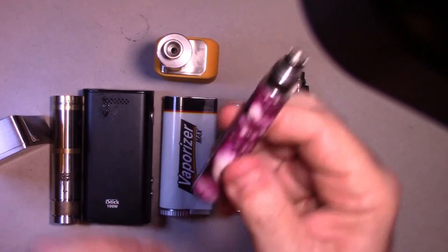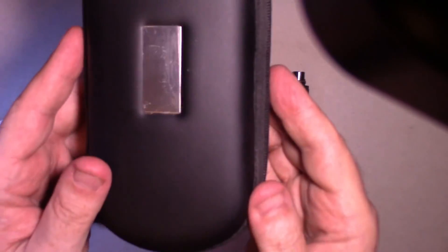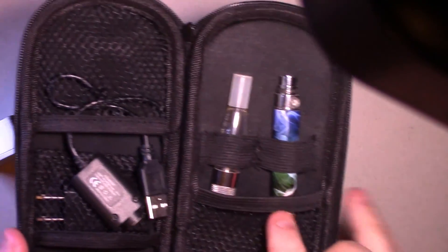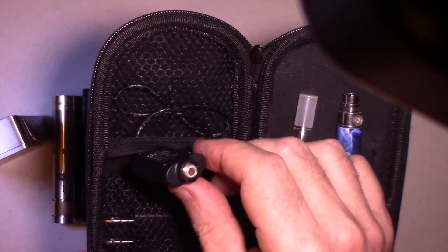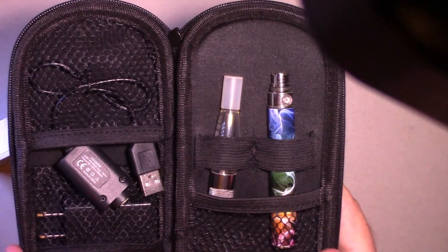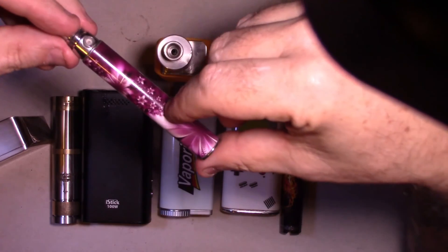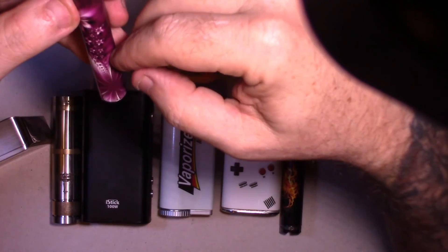And these come, usually, in some kind of little starter kit like this. Your little tank, a mod, a little charger. Screw this on, plug it in, and charge it. Now, with these guys, again, this is your battery. You screw your charger on here and you charge it when it gets low.